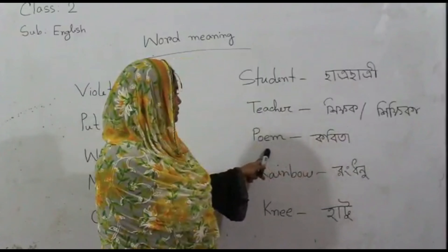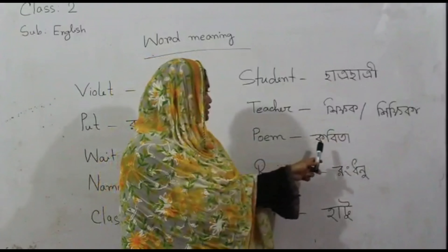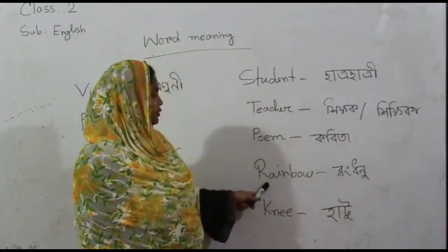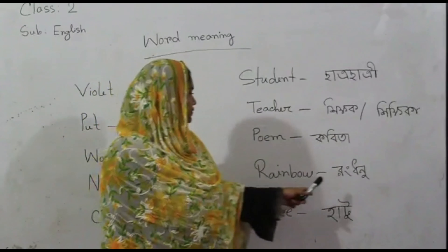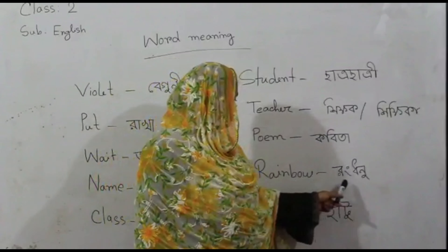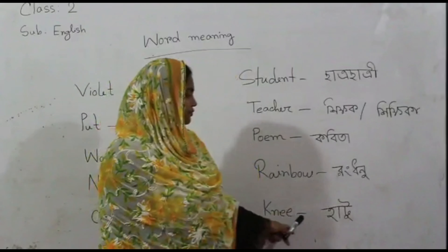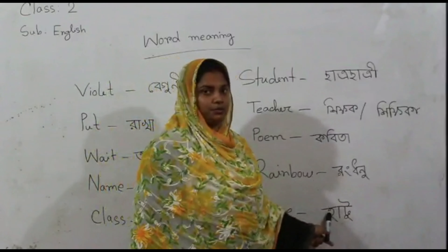O.M. means COVID. Rainbow means problem. N.I. means happy.